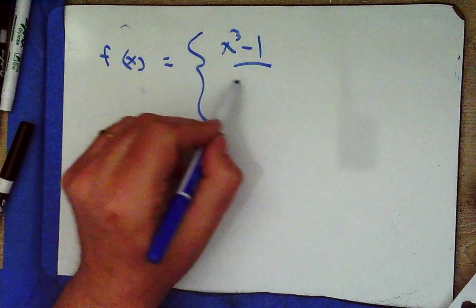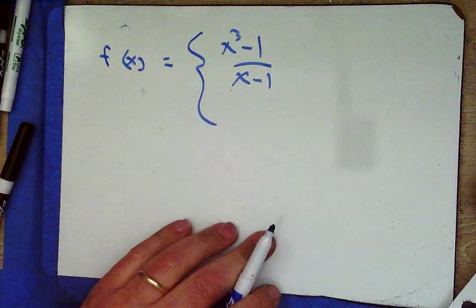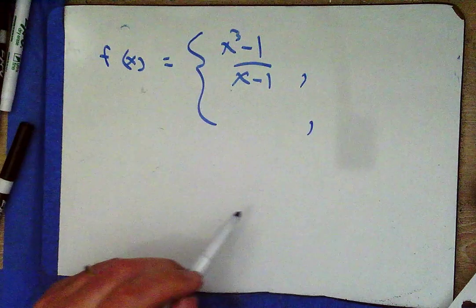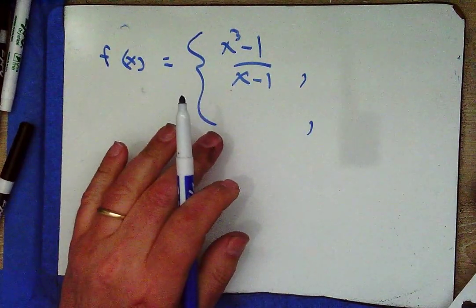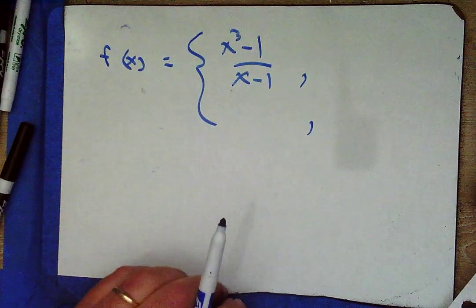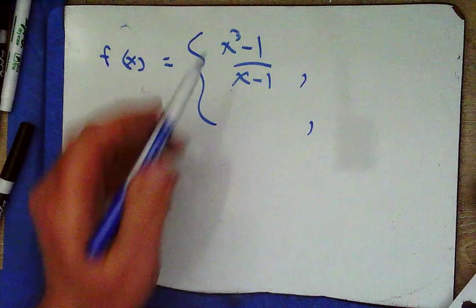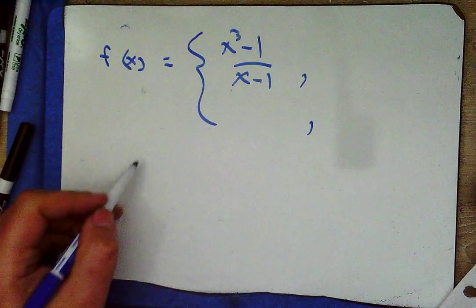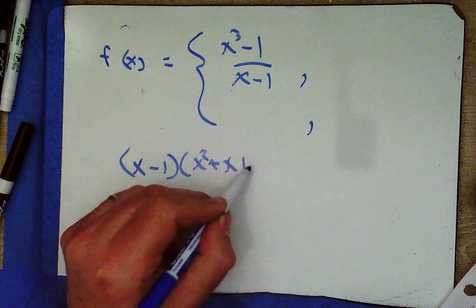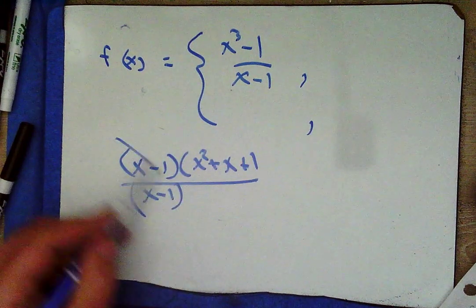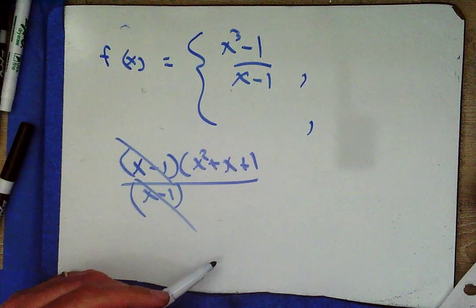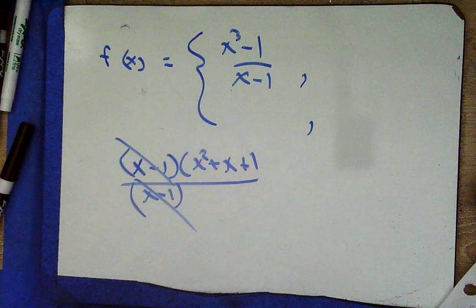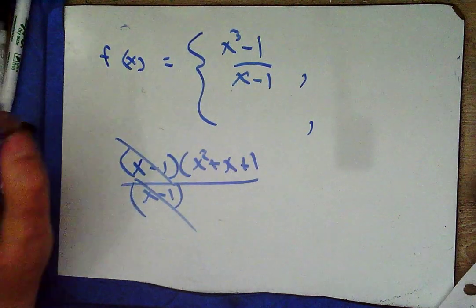Build a continuous extension for f of x equals x cubed minus 1 over x minus 1. Many students get stuck because they forget this is a difference of cubes, which factors as x minus 1 times x squared plus x plus 1 over x minus 1. Identifying the removable discontinuity requires good algebra skills.